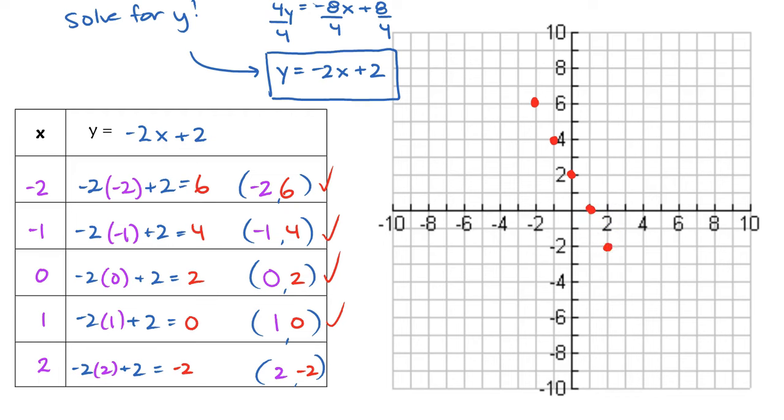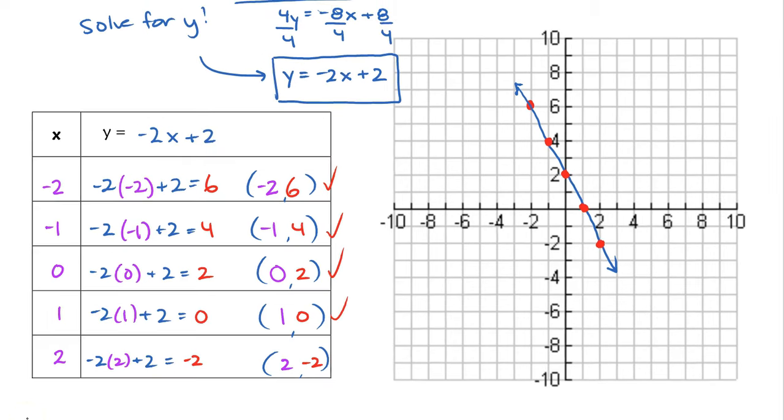Okay, now that we have our points, we are ready to connect those points with a straight line. Let's see if I can get it as straight as I can here. Not too bad, I guess. We always want to make sure we show arrows at the ends to signify that it is going forever and forever in both directions because it is made up of an infinite number of points. Okay, so we're finished with graphing our line.